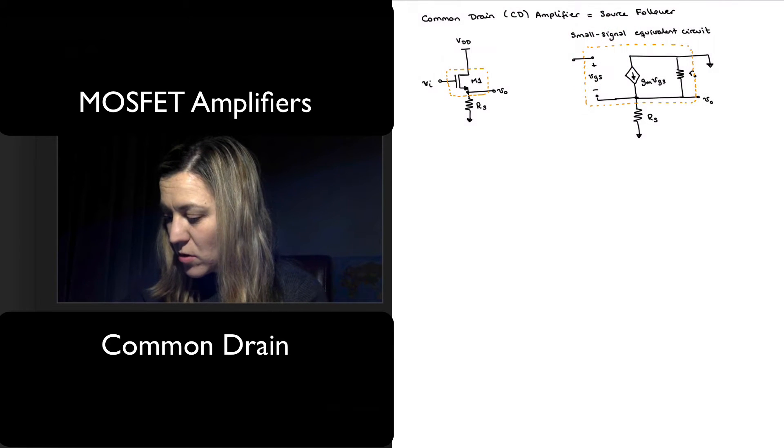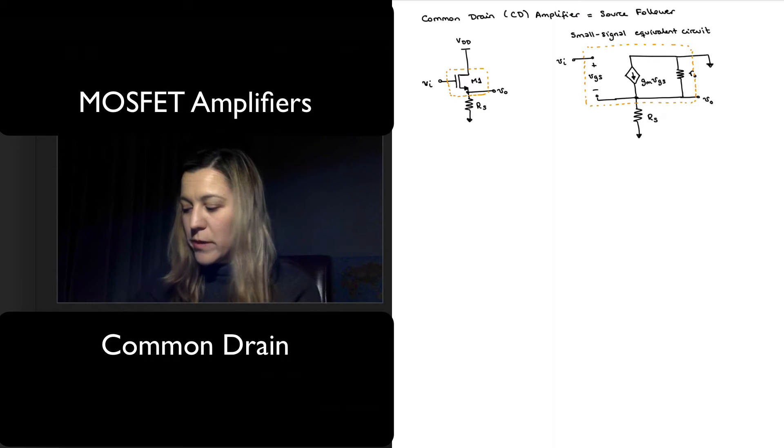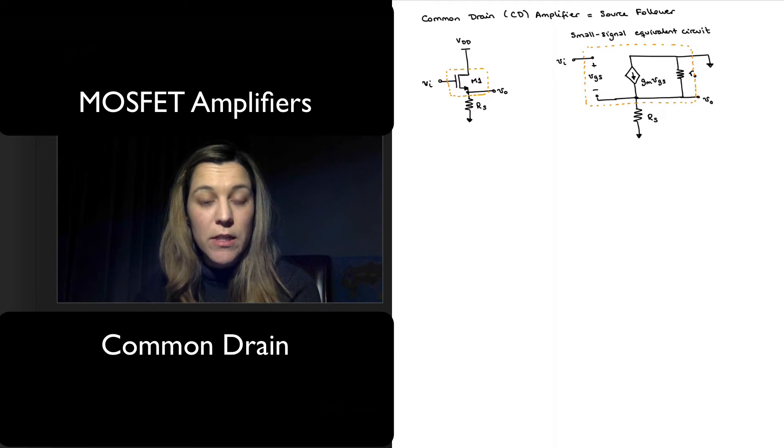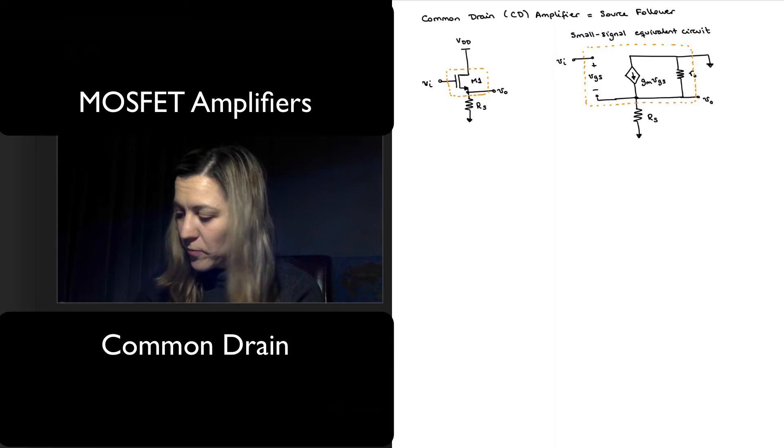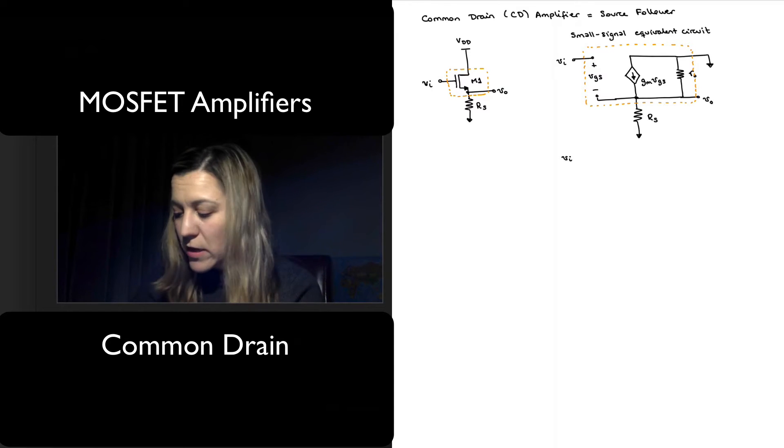And so this will be V_in, V_out will be out here. And now I want to find an expression for the voltage gain. I can basically find expressions for V_in and V_out and then find the ratio of V_out over V_in.